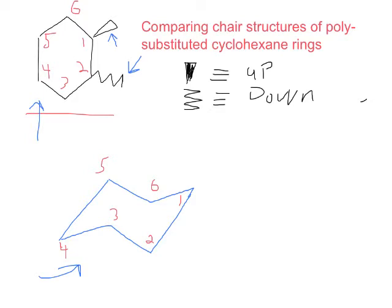Now I'll put in our substituents in red. On carbon 1, I'll put in the methyl substituent in the axial position, because that's the only position on carbon 1 that is going to be up. Then on carbon 2, we put our methyl group also in the axial position, because that is the only position that can be down. So in this first conformer of dimethylcyclohexane, we can see that both of the substituents are in the axial position.